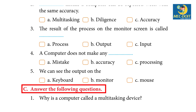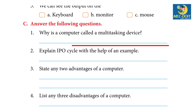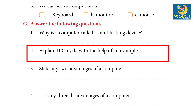Answer the following questions. 1. Why is a computer called a multitasking device? Answer: The running of multiple programs or sets of instructions in one computer at the same time. 2. Explain the IPO cycle with the help of an example. Answer: Example — making of mixed fruit juice. The ingredients like apple, pineapple, orange, and pomegranate are the input. The process is placing all the ingredients into a juicer jar, and the output is a glass of fresh mixed fruit juice. These three processes together are called IPO.